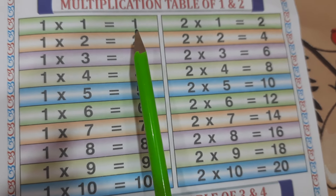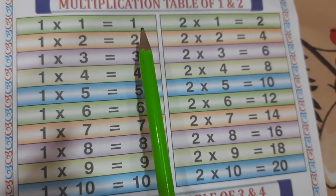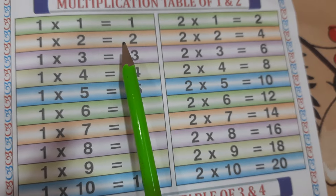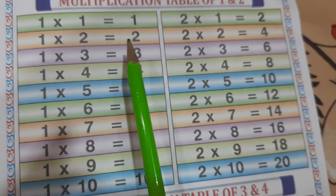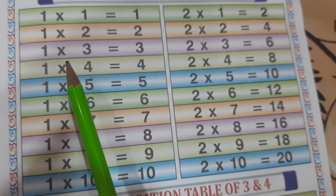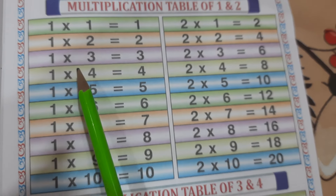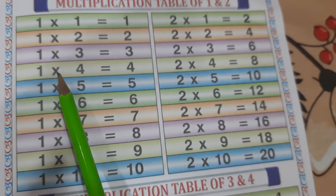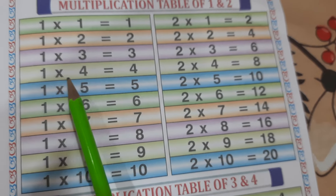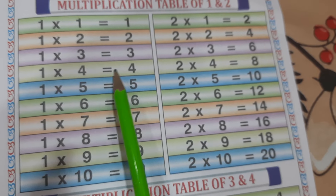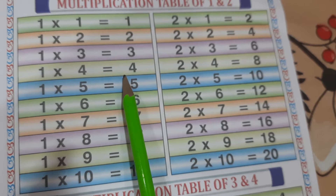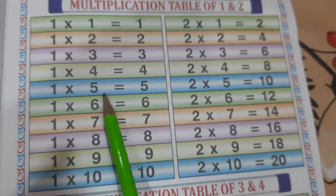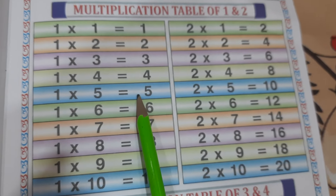1 1s are 1. 1 2s are 2. 1 3s are 3. 1 4s are 4. 1 5s are 5.